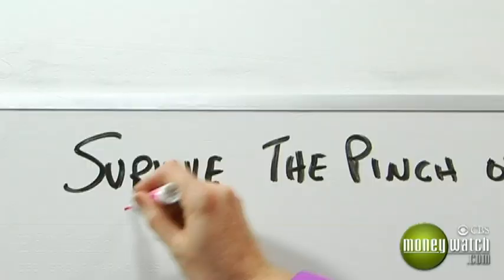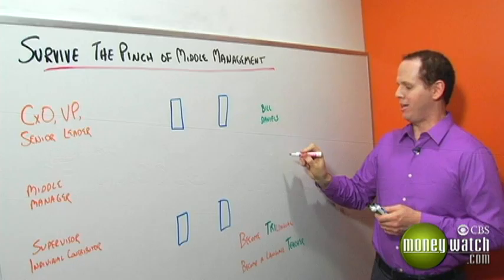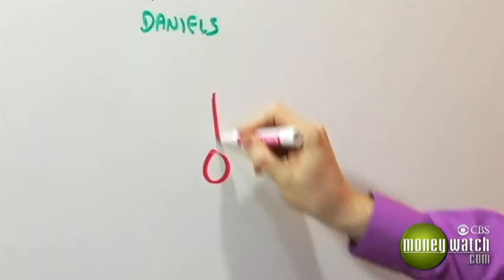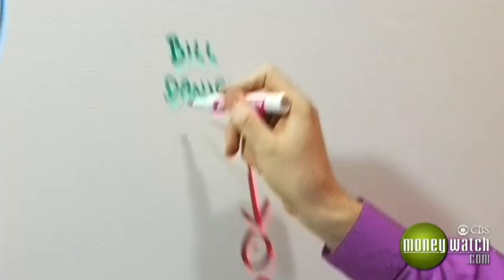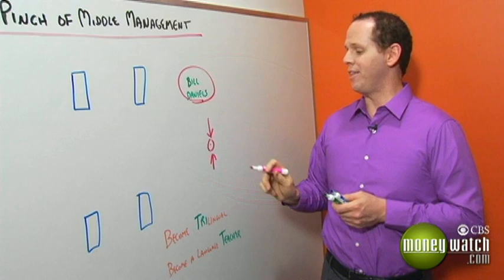Hi, I'm Ed Muzio, CEO of Group Harmonix, and I'm going to tell you how to survive the pinch of middle management. Are you a middle manager who feels trapped? Pressure above you from senior executives? Pressure below you from people underneath you in the organization? Not sure what to do? This is a common occurrence. Performance expert Bill Daniels taught me a metaphor for an organization that explains both why this happens and what you can do about it.